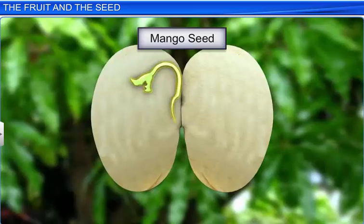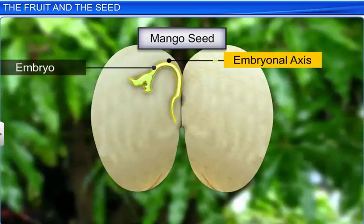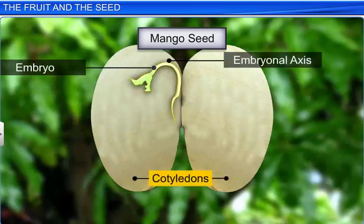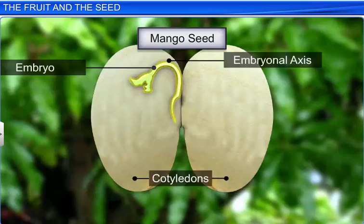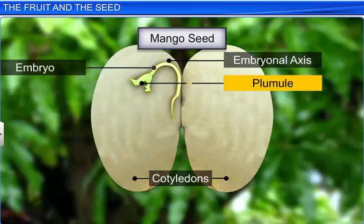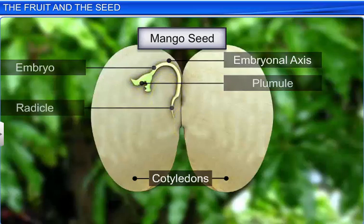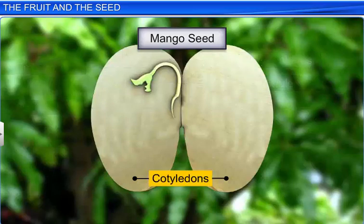Inside the seed coat lies the embryo, which comprises an embryonal axis and two cotyledons. At the two ends of the embryonal axis lie the plumule and the radicle. The cotyledons are often fleshy and store reserve food materials.